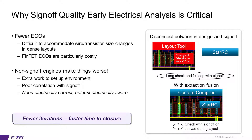So why is it critical to have sign-off quality in-design analysis? Because it can avoid layout rework from RC measurement errors and lead to fewer iterations, which means faster time to closure. Without sign-off engines for in-design analysis, users have to spend extra effort to set up the whole environment, which cannot be reused later in the sign-off review stage. Often the results from non-sign-off engines have poor correlation with sign-off results, making things even worse in terms of time to design closure.